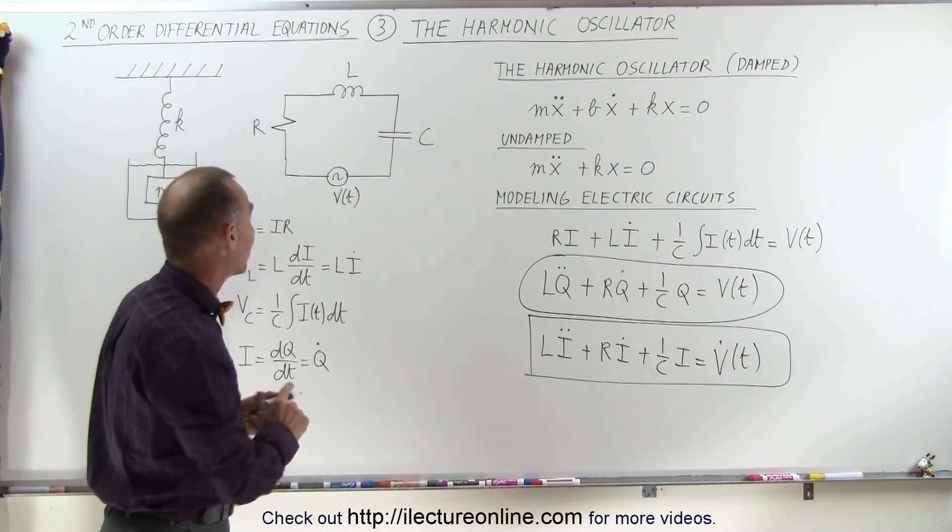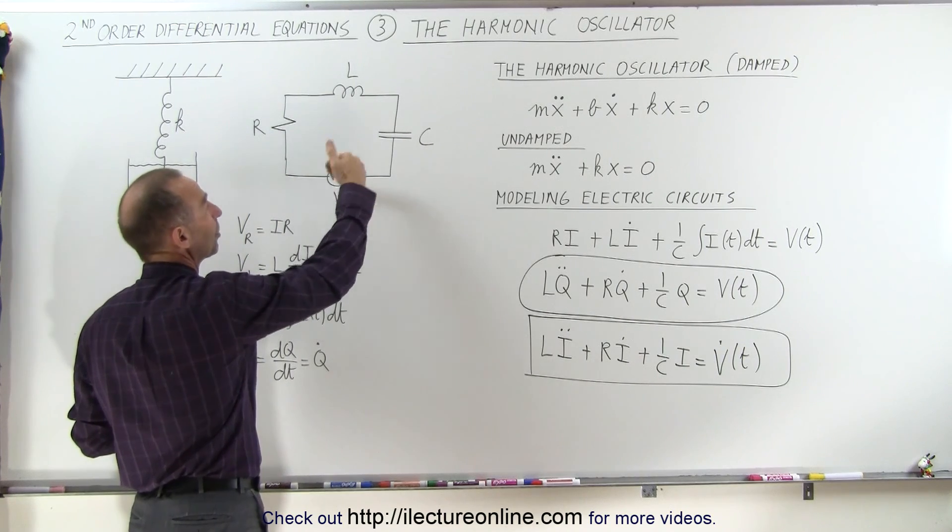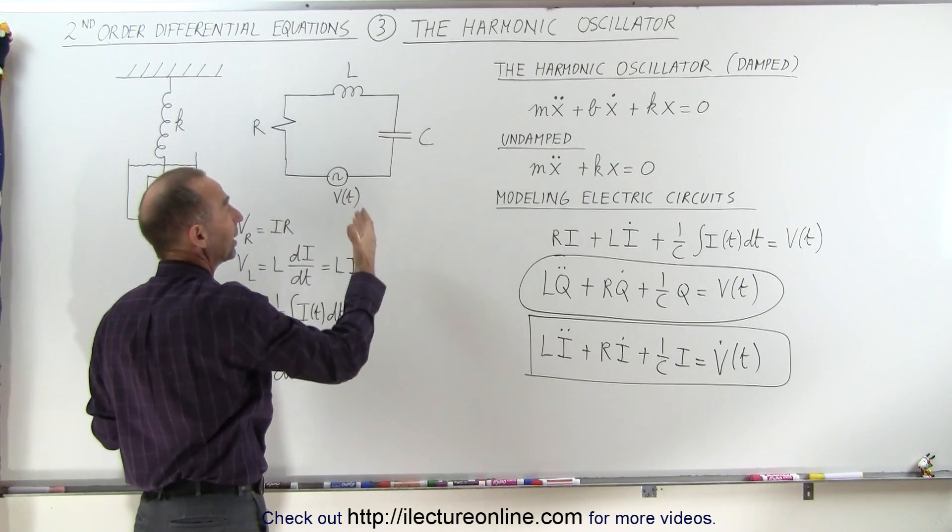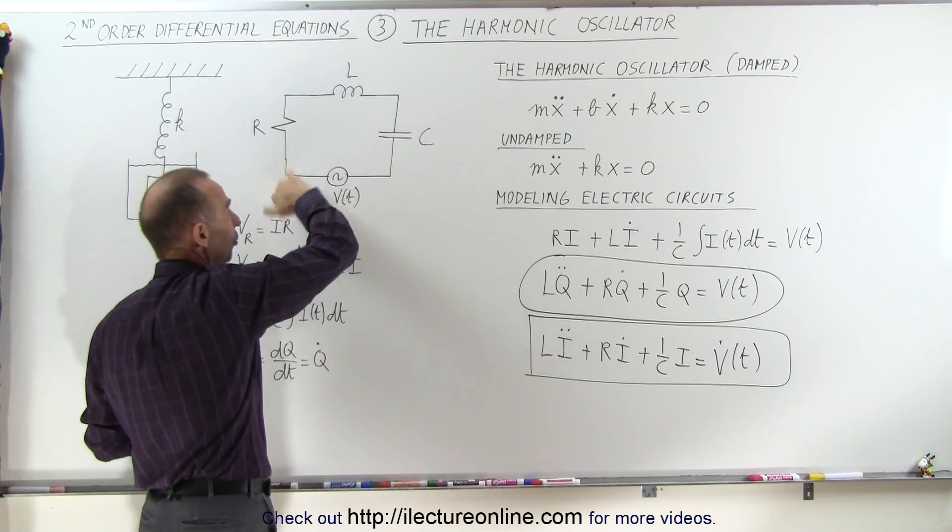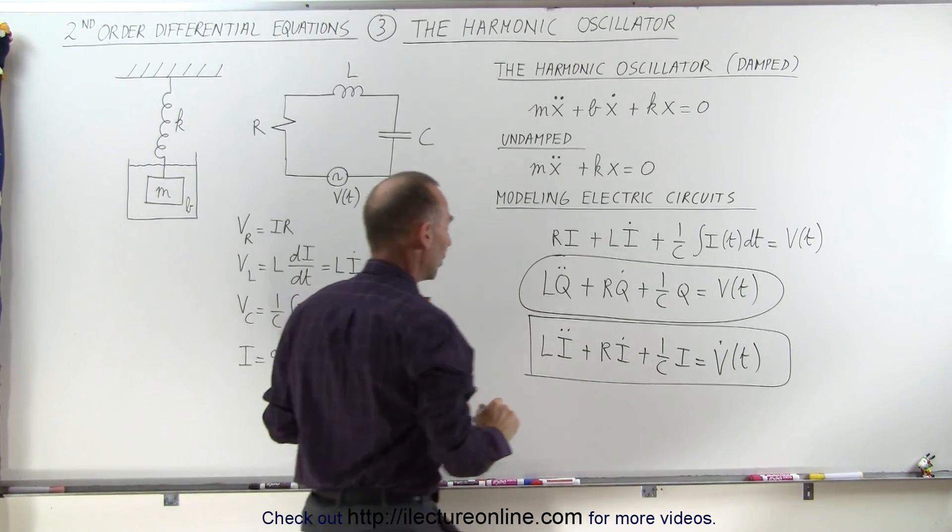And finally, let's say that we take away the source, so it's not driven at all. We simply put a charge on the capacitor, we let go, and then the charge will just go back and forth and back and forth inside the circuit.